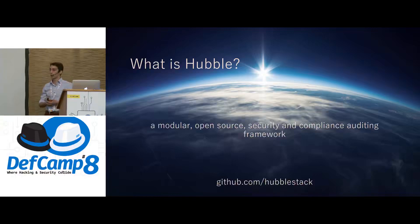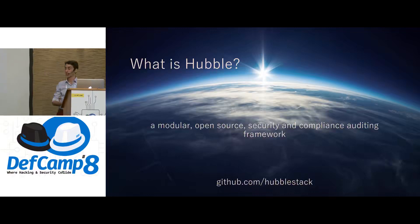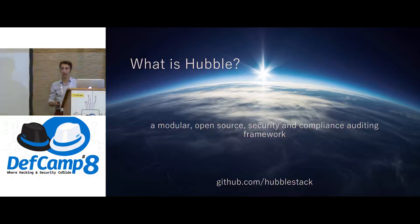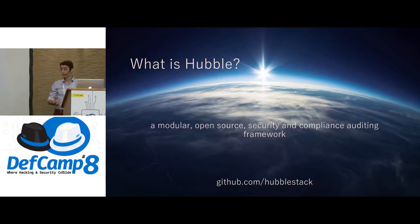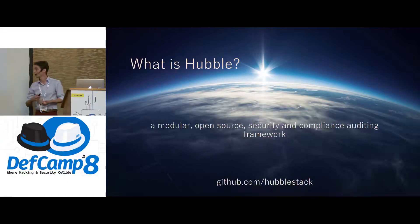Hubble is a modular open source security and compliance framework. It's designed for building robust host monitoring capabilities, and it leverages the OS Query capability. It's built on top of SaltStack. Therefore, at its core, it's written in Python. It was open sourced by Adobe in early 2016. It's publicly available at github.com/HubbleStack. It's a high performance and low footprint tool. There are multiple components to Hubble: NOVA, Nebula, Pulsar, and Quasar.